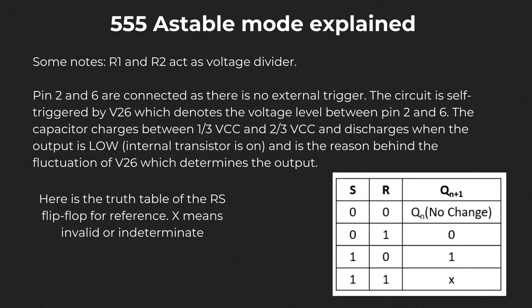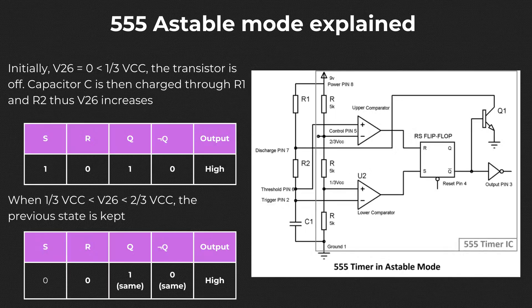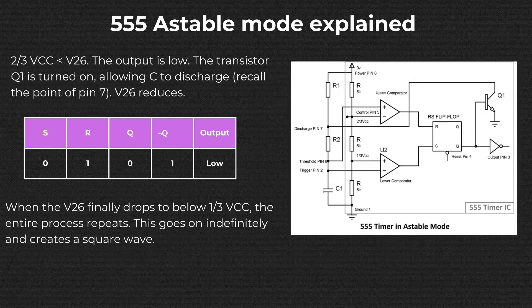Here I have also included an explanation of how this 555 astable mode multivibrator works. You need basic electronics knowledge regarding transistors, op-amps, and RS flip-flops to understand. Just remember that the timing capacitor is always charged between one-third of VCC and two-thirds of VCC, and discharged through R2 or RB only. This creates the fluctuation in the voltage level between pin 2 and 6, and therefore the output is changed. The detailed process of each stage is shown here.